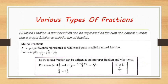Now, how to convert a mixed fraction into an improper fraction. Let's see with an example: 4 whole 1 by 5 can also be written as 4 plus 1 by 5. On solving, in the numerator we write 4 into 5 plus 1, which is 21, and the denominator remains the same. So 4 whole 1 by 5 can be written as 21 upon 5, which is an improper fraction.